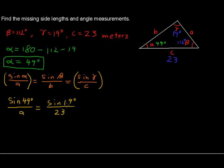And now we can multiply by A and then divide by this and we would get A equals 23 multiplied by the sine of 49 degrees over the sine of 19 degrees. And you can take that step by step.